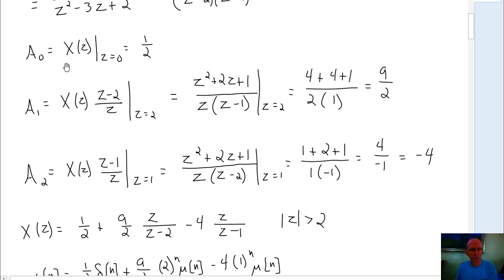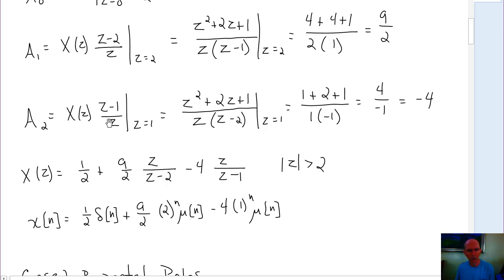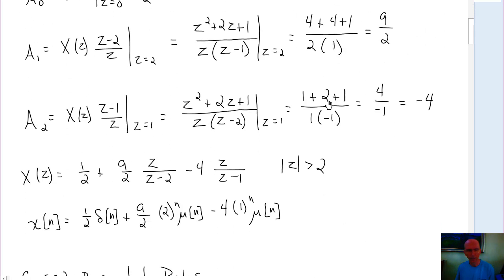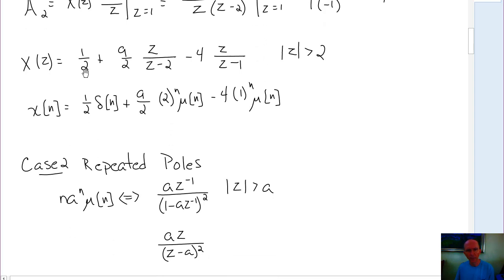We find the coefficients this way. For A₀, if we simply set z equal to 0, the other two terms go to zero, so A₀ is simply X of z evaluated at z equal to 0. By inspection, we get 1/2. We find A₁ and A₂ the same way we do all partial fraction expansions. We take A₁, multiply by the cofactor of A₁, and evaluate at the pole z equal to 2. We see that A₁ is equal to 9/2. We do the same thing with A₂, multiply by z minus 1 over z, evaluated at the pole z equal to 1, and we find A₂ is equal to negative 4.